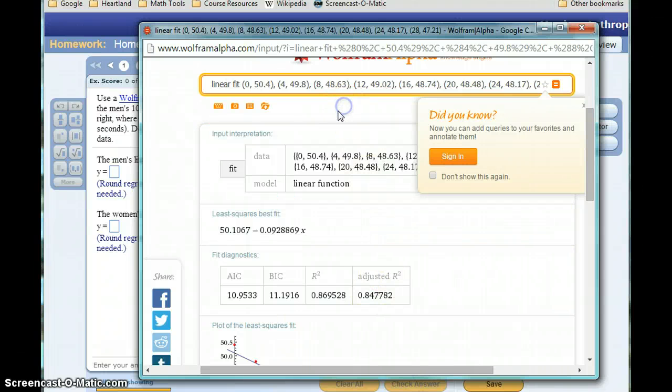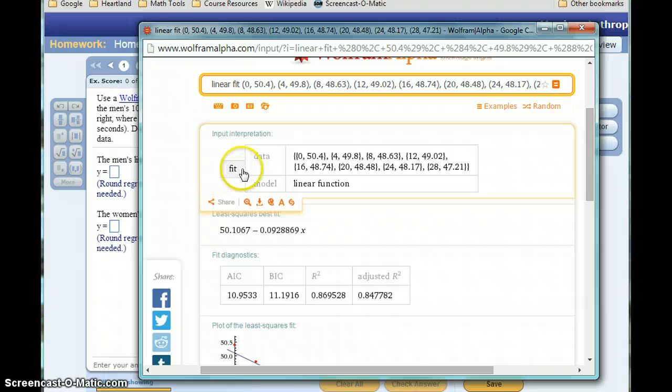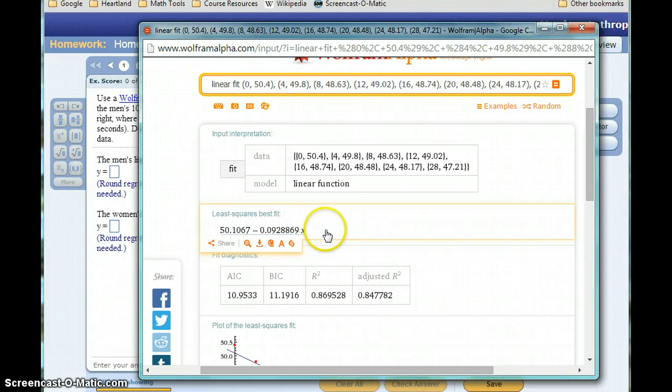We can get rid of this little box that popped up. We can check this input interpretation just to make sure this makes sense. So what it's looking at is these list of data points. It's constructing a linear function. And then the least squares best fit, or essentially the regression model, that linear equation for that data, is given to us right here.